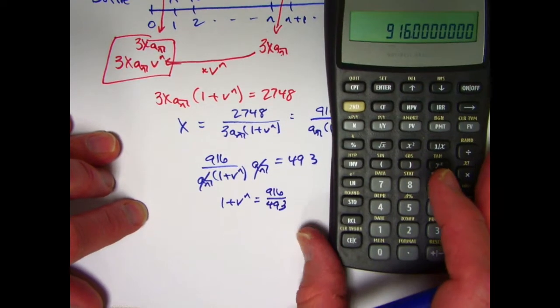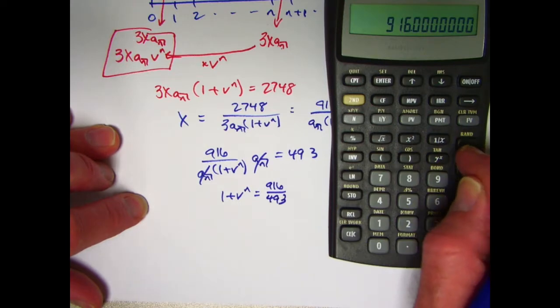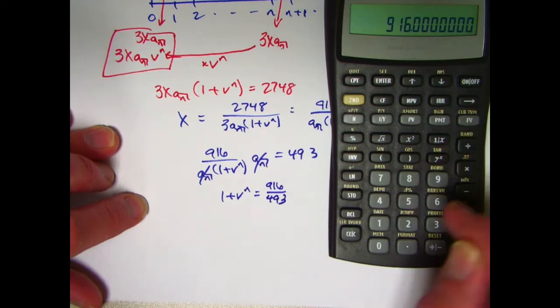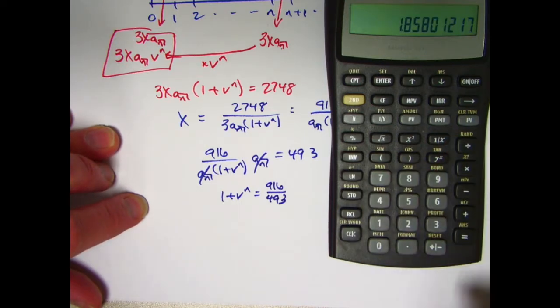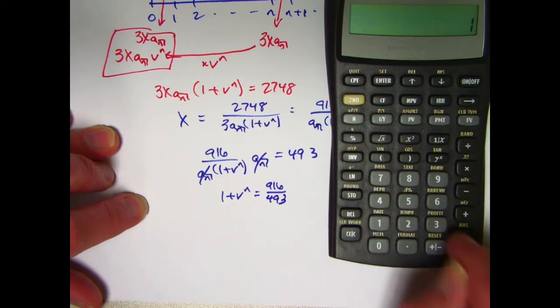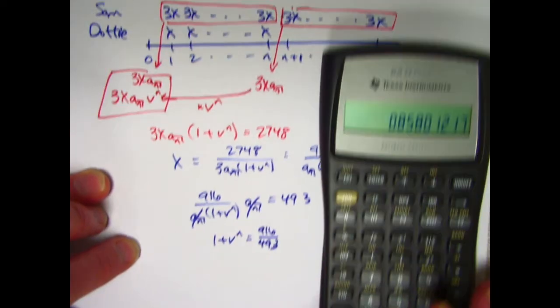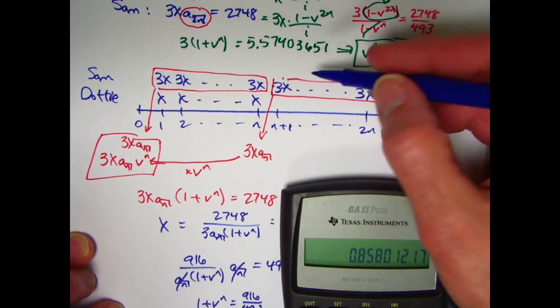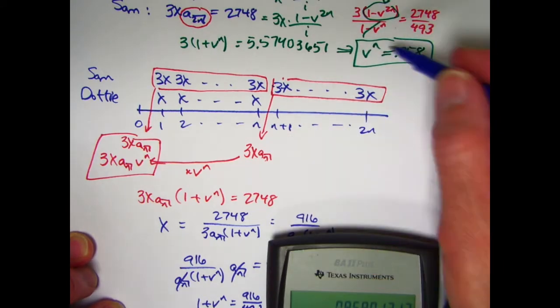1 plus v to the n is going to be 916 divided by 493. And then I'd subtract 1. Let's see if we get the same answer. 916 divided by 493. Yes, we are going to get the same answer about 0.858. Okay? So where'd the 0.858 go? There we go.